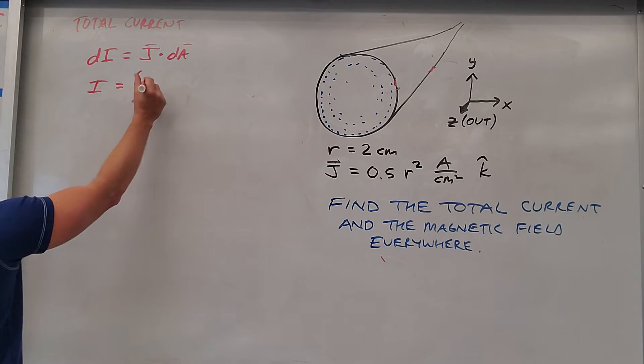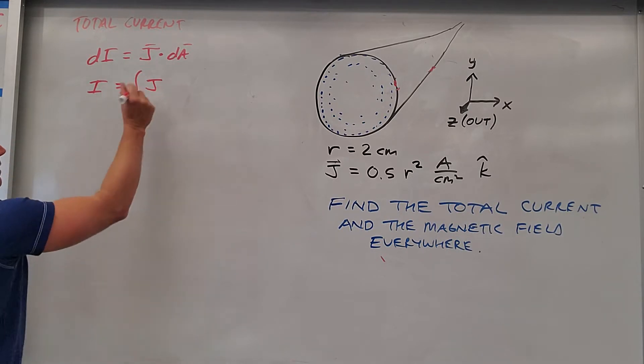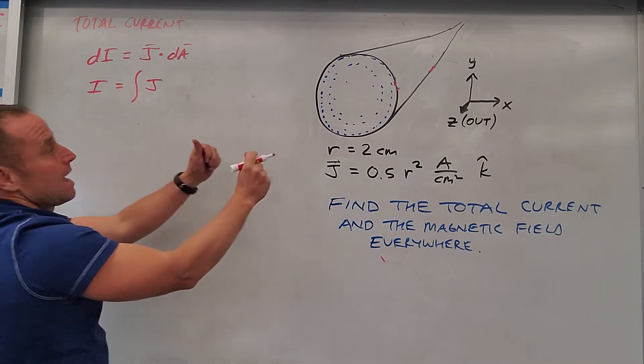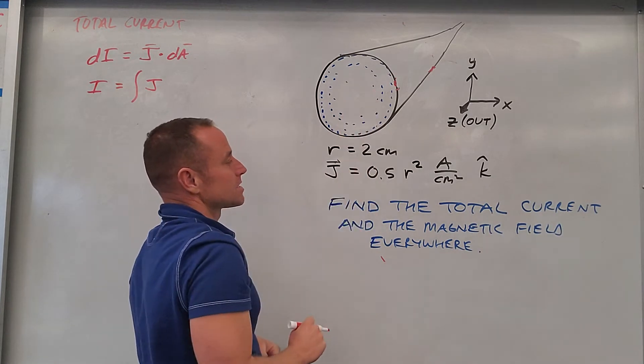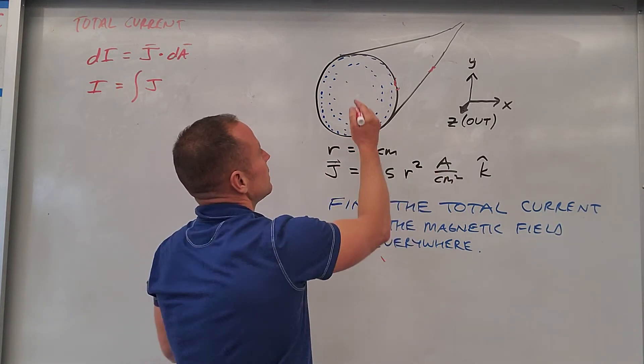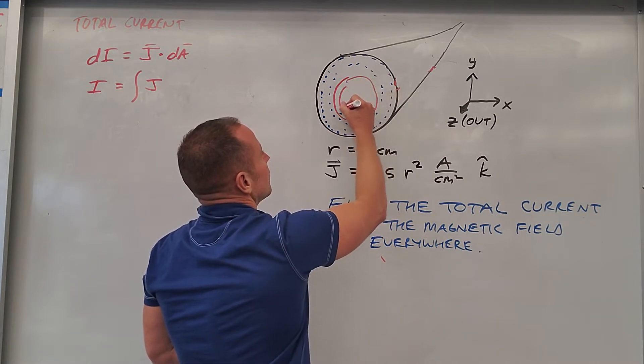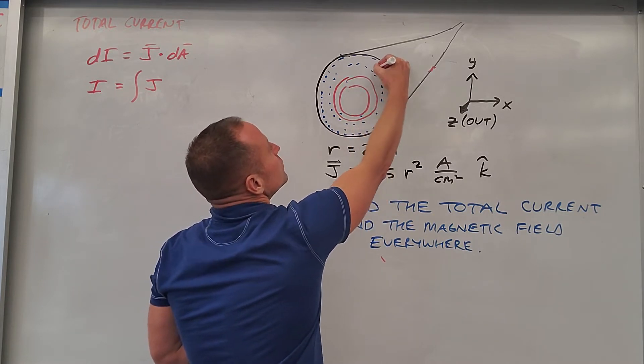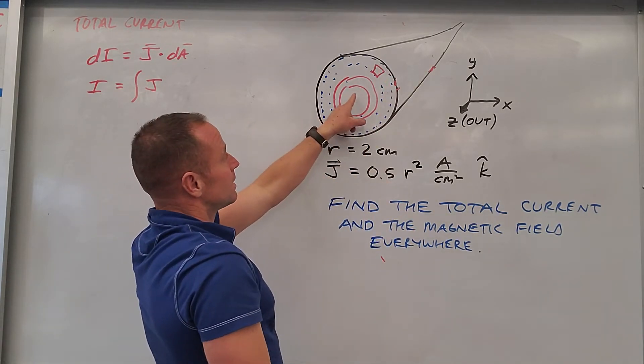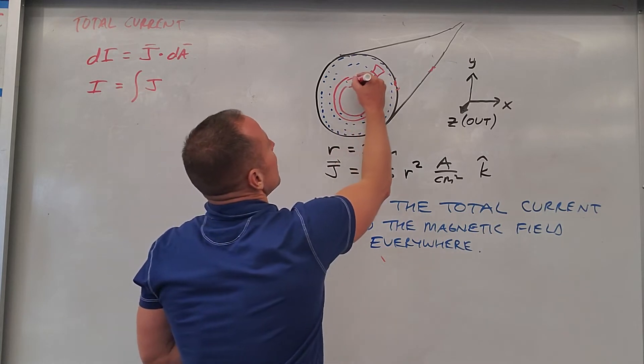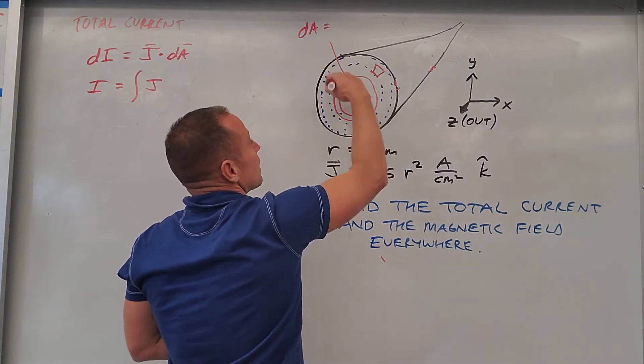So we have to do the integral of j dot dA. Well, j and dA are going to point in the same direction out of the page at us. We just got to decide how we're going to carve this up. Well, since it's only radially dependent, we might as well carve it up into little rings. We can use this, where our dA is 2 pi r dr. So it's like the circumference times the thickness.